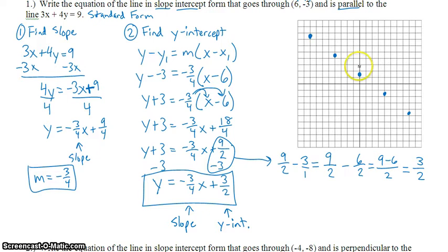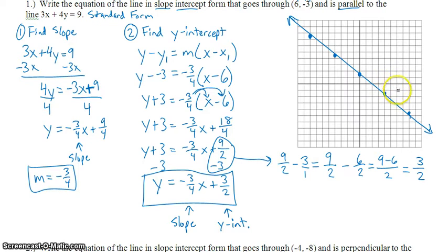Now I need to connect all of those points. A line is a collection of an infinite number of points, and if I plug in the ordered pairs into this equation, I'd get a true statement. To check this answer, does this line go through 6, negative 3? Yes. Is it parallel to this line? Yes — they both have the same slopes.